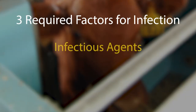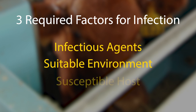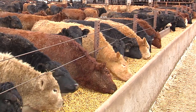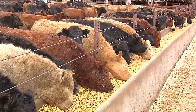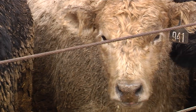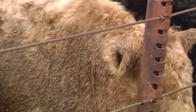The three factors required to cause an infection are an infectious agent, a suitable environment providing a means of transmission, and a susceptible host. Infectious agents always will be present, but you can reduce the risk of disease with good animal management, proper veterinary care, and sound biosecurity.